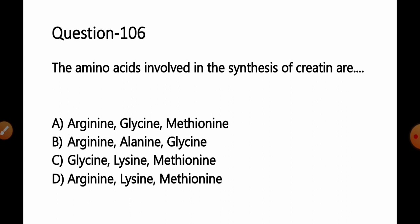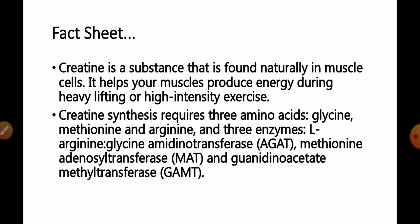Fact available for this question: Creatine is a substance that is found naturally in muscle cells. It helps your muscles to produce energy during heavy lifting or high intensity exercises. Creatine synthesis requires three amino acids: glycine, methionine, and arginine. And three enzymes: L-arginine glycine amidino transferase, second is methionine adenosyl transferase, and last one is guanidinoacetate methyl transferase.